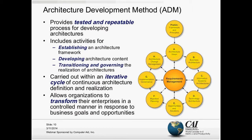Phase H covers managing change, so when something changes in the business or technology environment we have a proactive position to respond. This diagram should be understood as a conceptual process model, not interpreted literally as a waterfall method. Phases G and H are actually operational activities you need to be performing all the time, irrespective of whether an enterprise architecture project has begun — which is really what phases A through F are about. The whole idea behind the ADM is to give organizations the ability to transform and manage their architecture landscape in a controlled fashion.